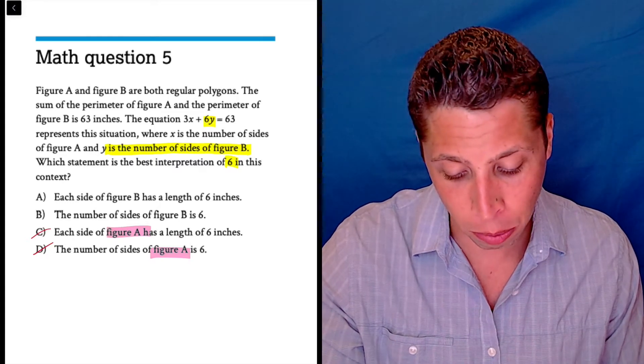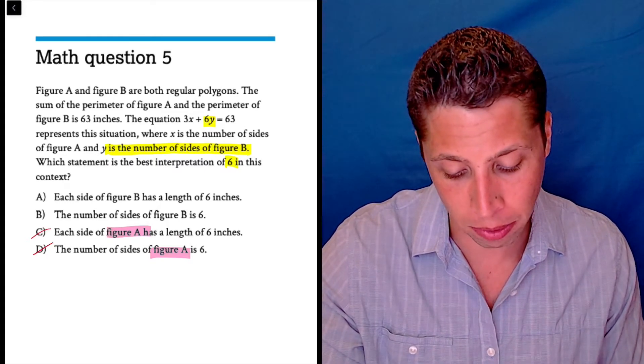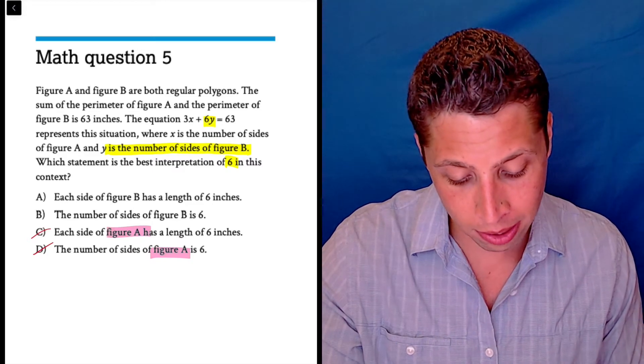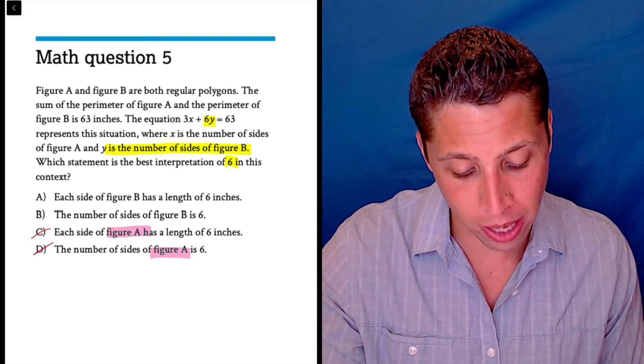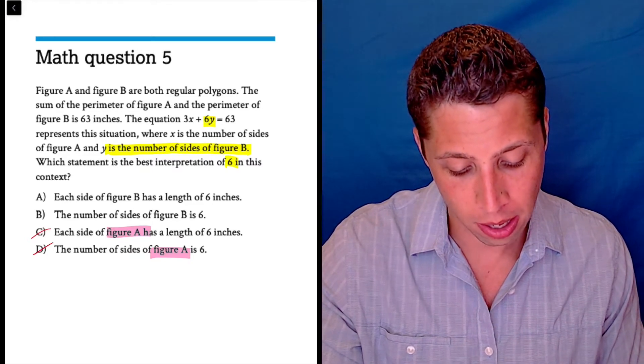Figure A and figure B, they're both regular polygons. The sum of the perimeter of figure A and the perimeter of figure B is 63 inches, where X is the number of sides of figure A, and Y is the number of sides of figure B.